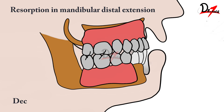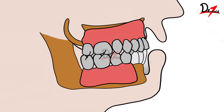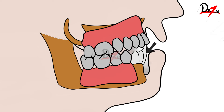When resorption occurs in the mandibular distal extension area, the vertical dimension of occlusion will decrease, compromising retention and stability. Because of the entire change in the tilt of the occlusal plane, the mandibular anterior teeth become dis-occluded — they no longer have an antagonist in the opposing arch.